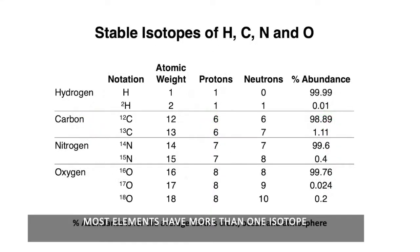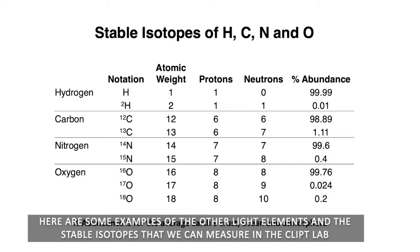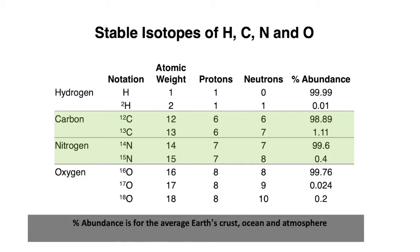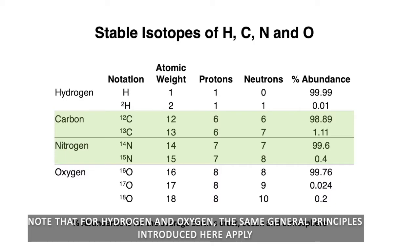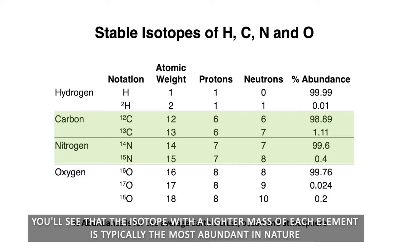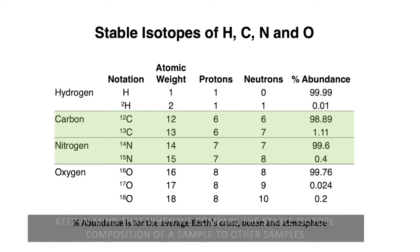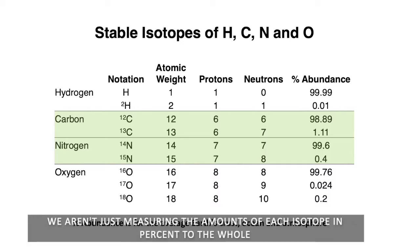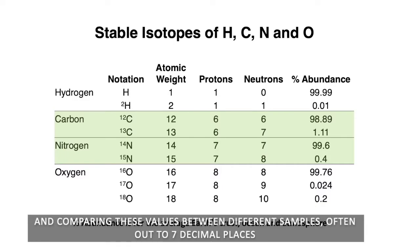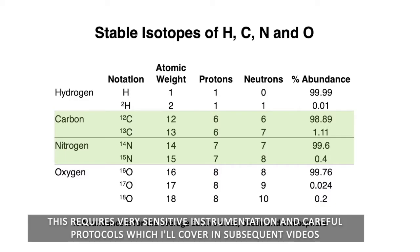Most elements have more than one isotope. Here are some examples of the other light elements and the stable isotopes that we can measure in the CLIPT lab. For the purposes of this video series, I am going to focus primarily on the isotopes of carbon and nitrogen, since they are the bulk of what we analyze. Note that for hydrogen and oxygen, the same general principles introduced here apply. If you look in the percent abundance column, you'll see that the isotope with a lighter mass of each element is typically the most abundant in nature. When we compare the stable isotope composition of a sample to other samples, we aren't just measuring the amounts of each isotope in percent to the whole — we are actually measuring the differences in the ratios of heavier isotopes to the lighter isotope, and comparing these values between different samples, often out to seven decimal places. This requires very sensitive instrumentation and careful protocols, which I'll cover in subsequent videos.